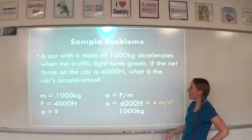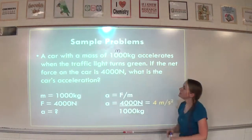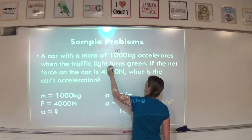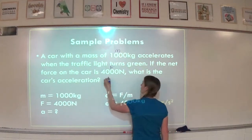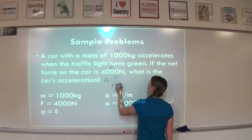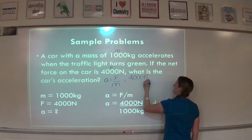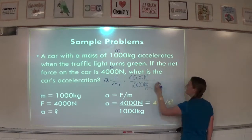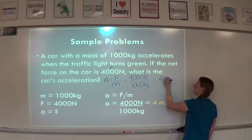Here's an example: a car with a mass of 1,000 kilograms accelerates when the traffic light turns green. If the net force on the car is 4,000 Newtons, what is the car's acceleration? We know acceleration equals force divided by mass, so we plug in: force is 4,000 Newtons divided by mass 1,000 kilograms. 4,000 divided by 1,000 is 4, and the unit for acceleration is meters per second squared.